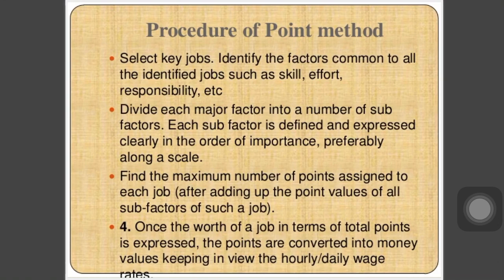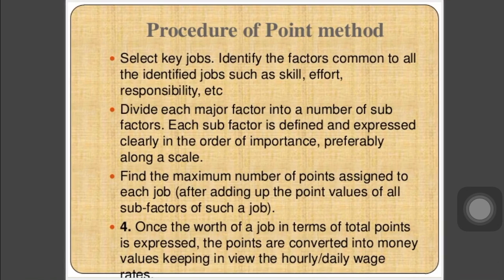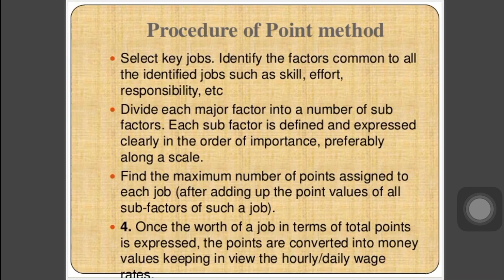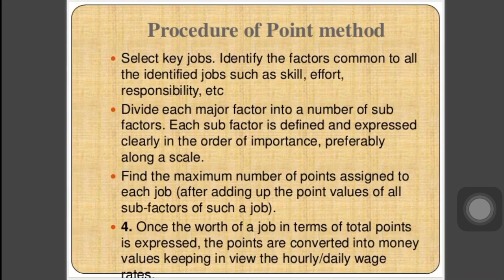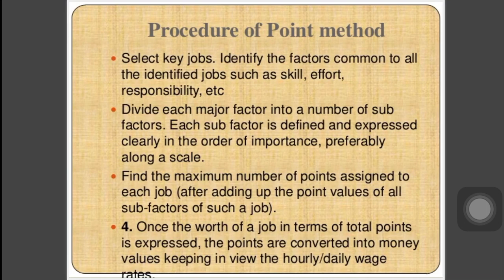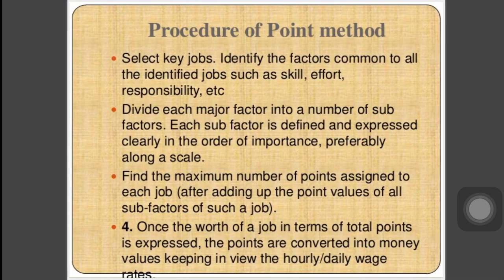The procedure of the point method is: first select the job, identify factors common to all jobs — such as skill, effort, and responsibilities. Divide each major factor into sub-factors, defined and expressed clearly in order of importance. Find the maximum number of points assigned to each job. Add point values of sub-factors for each job. Finally, once the worth of the job is expressed in total points, those points are converted into money values, keeping in view the hourly or daily wage rules.